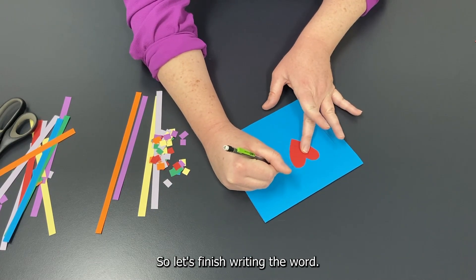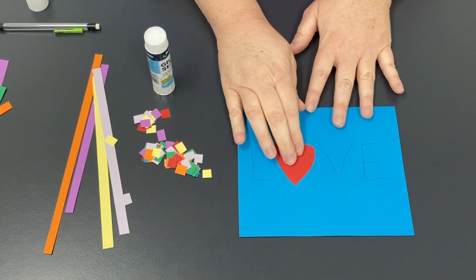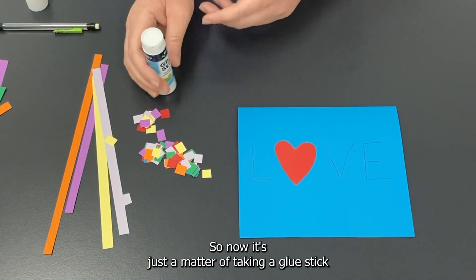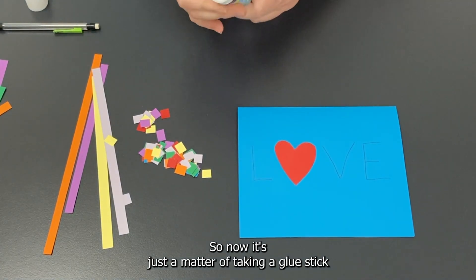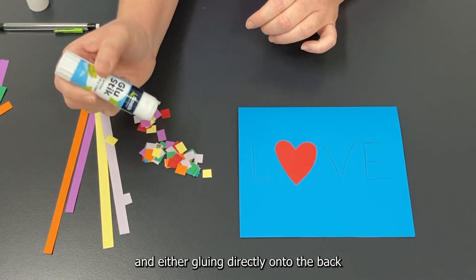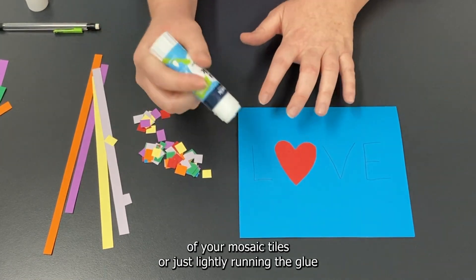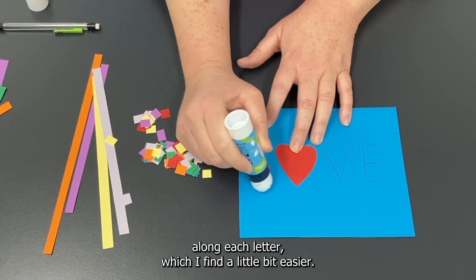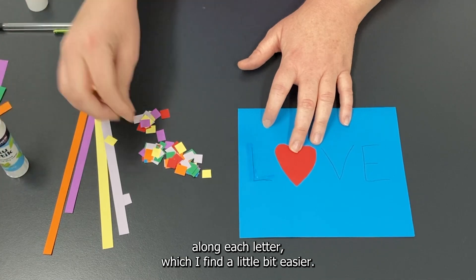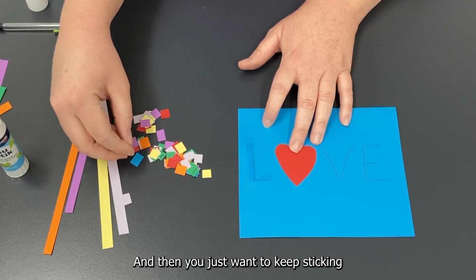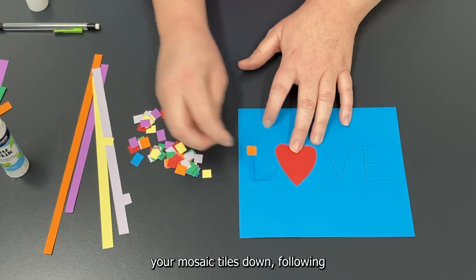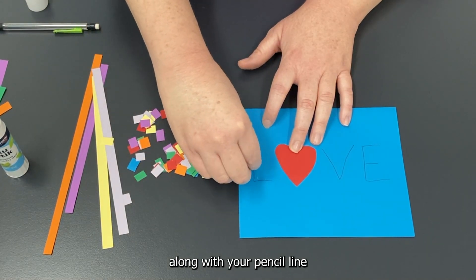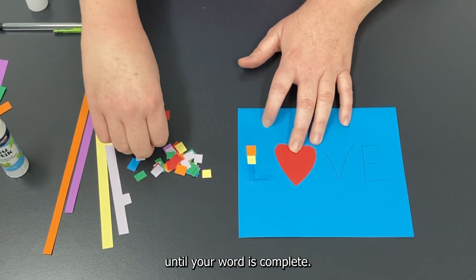So let's finish writing the word. Alright, I've got my rough pencil outline here of where I want my tiles to go, so now it's just a matter of taking a glue stick and either gluing directly onto the back of your mosaic tiles or just lightly running the glue along each letter, which I find a little bit easier. And then you just want to keep sticking your mosaic tiles down, following along with your pencil line until your word is complete.